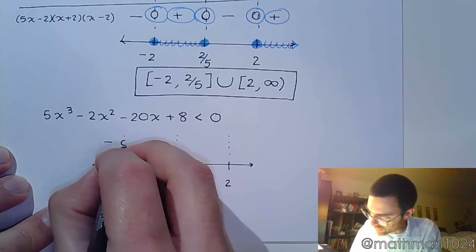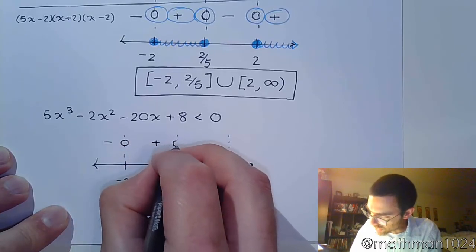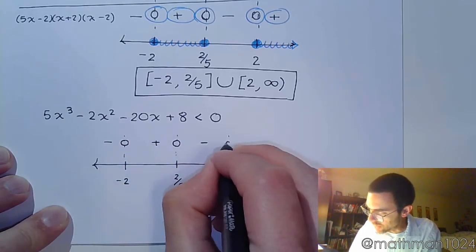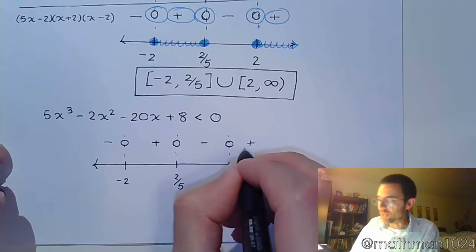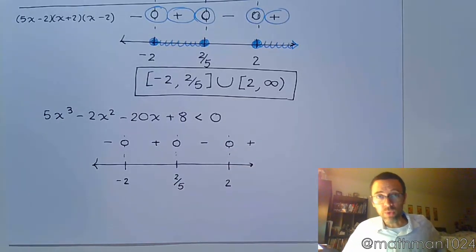The pattern for your signs would still be exactly the same. Where you have negative 0, positive 0, negative 0, positive. That's what this guy is going to look like no matter what.